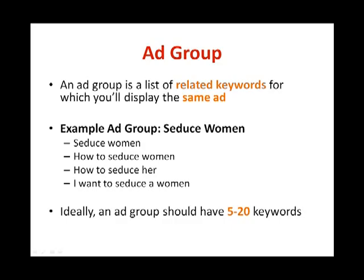Now let's move on to ad groups. An ad group is basically a list of related keywords for which you display the same ad. For example, an ad group called 'seduce women' would include keywords like 'seduce woman,' 'how to seduce woman,' 'how to seduce her,' and 'I want to seduce woman' — all of these keywords would trigger the same ad. Ideally, an ad group should have between 5 to 20 keywords, though the fewer the better as it will be more targeted to your ad.